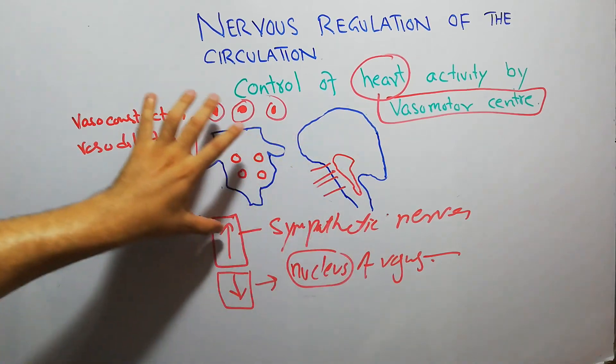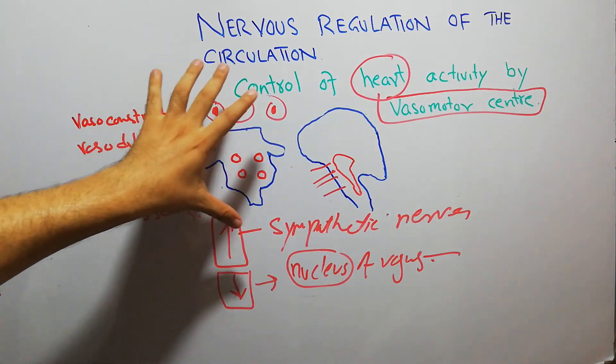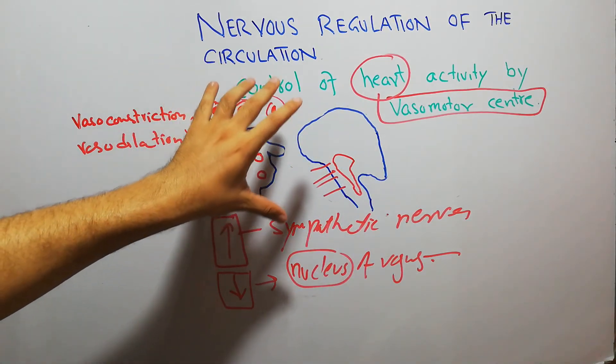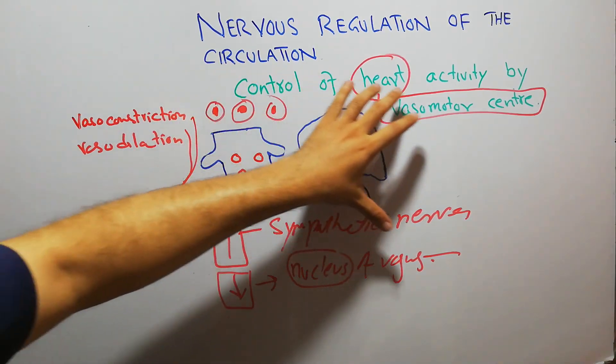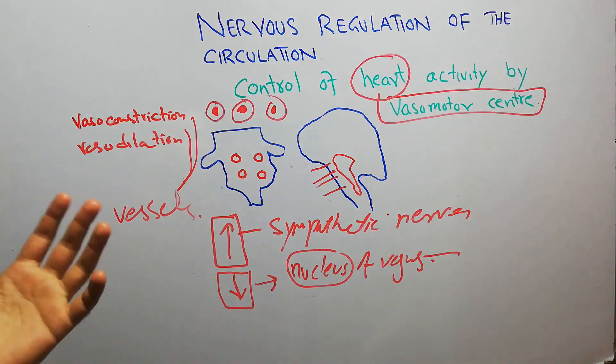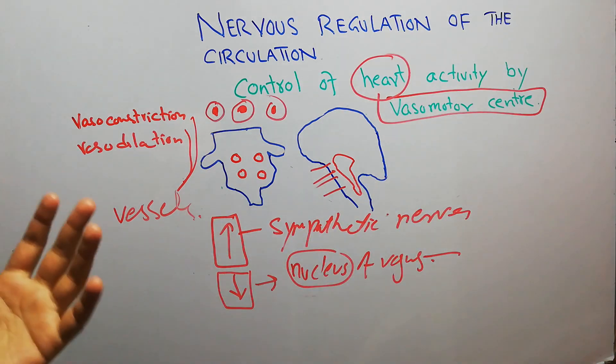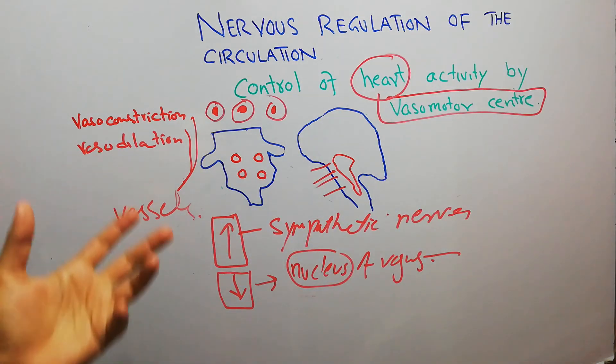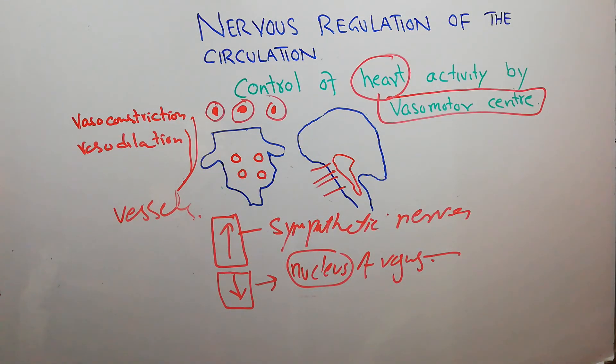That's all about the control of heart activity by the Vasomotor Center — how it plays its role in increasing and decreasing heart activity.